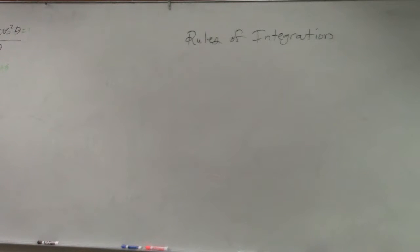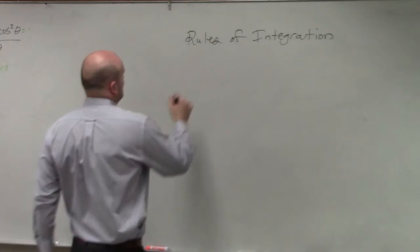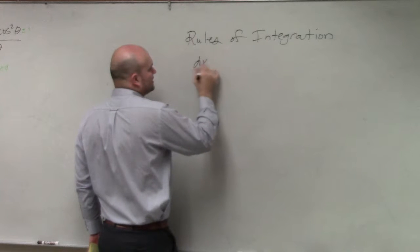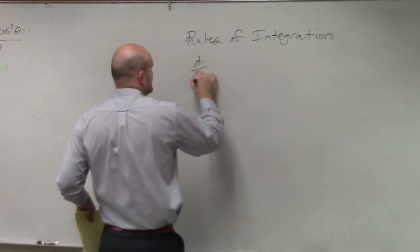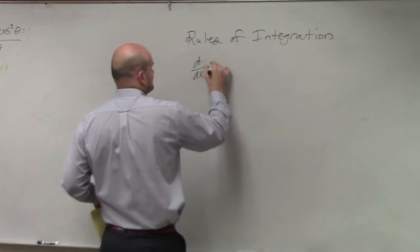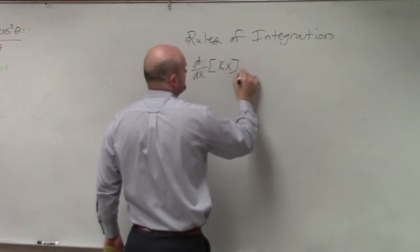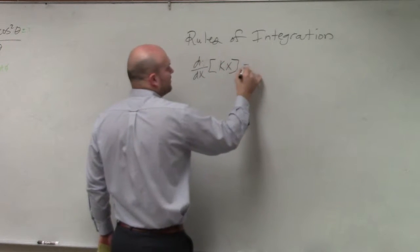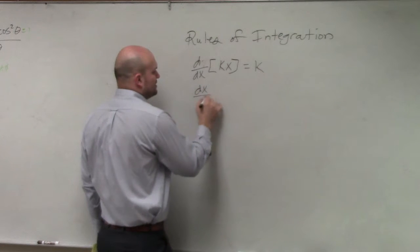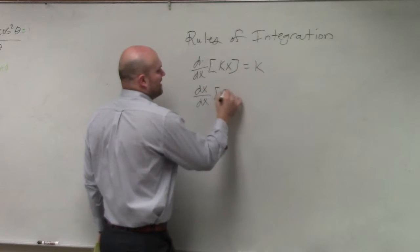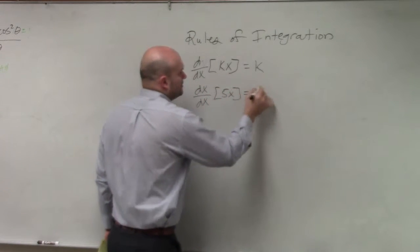If you remember taking the derivative — d over dx of kx — then we know that value just equals k. For an example, d over dx of 5x equals 5.